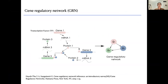First, let me give a brief introduction to the gene regulatory network, or GRN. We know genes carry their genetic information, and if the product of gene 1 can bind with the DNA region of gene 2 and influence the expression level of gene 2, then we can say that gene 1 can regulate gene 2.